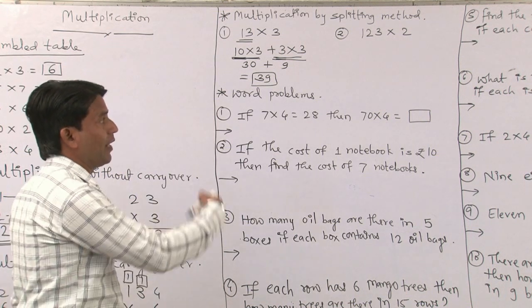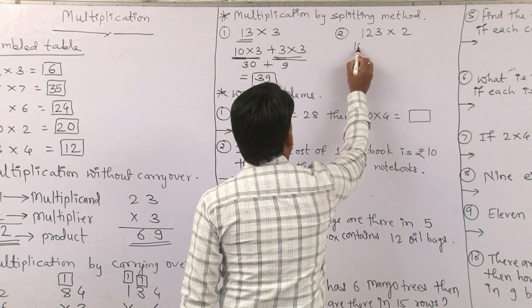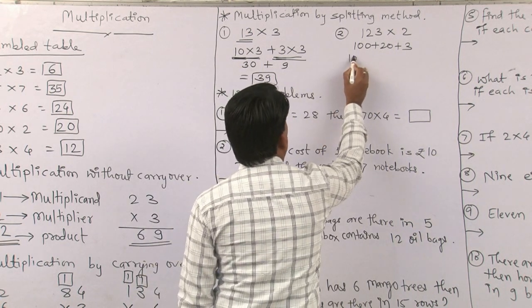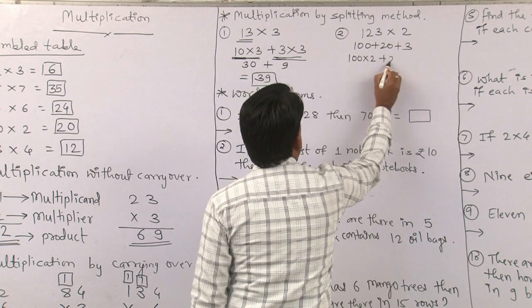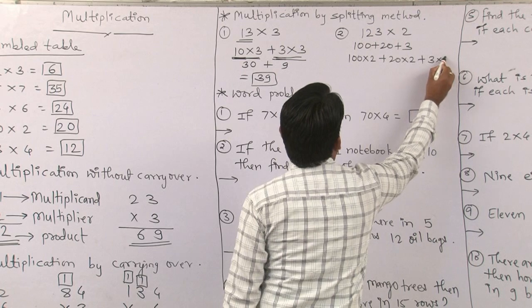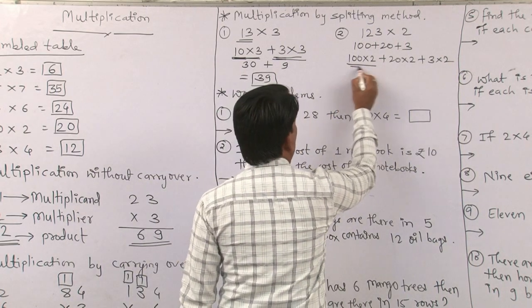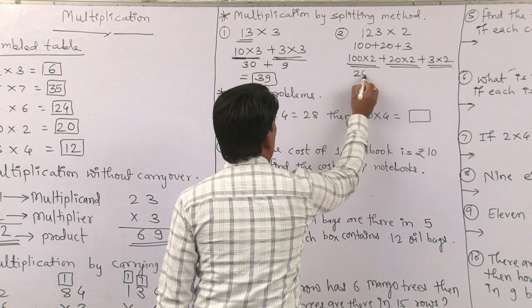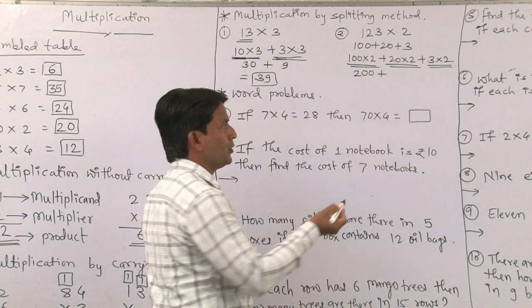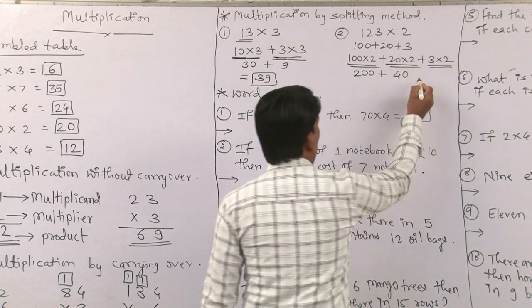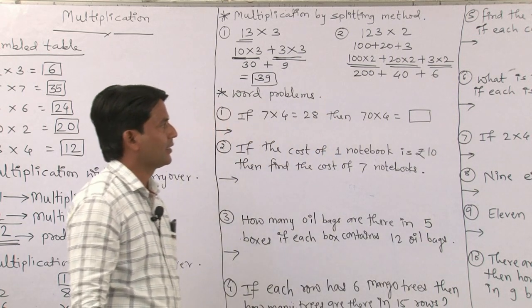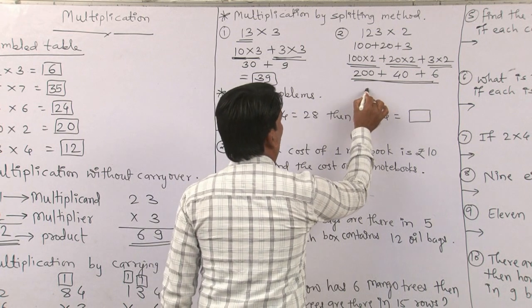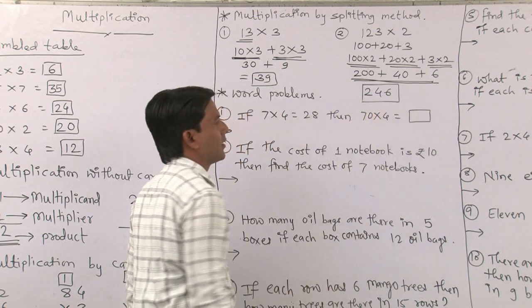Next example using splitting method: 123 multiplied by 2. Expanded form is 100 plus 20 plus 3. Split it: 100 multiplied by 2 is 200, plus 20 multiplied by 2 is 40, plus 3 multiplied by 2 is 6. Writing in contracted form: 200 plus 40 plus 6 equals 246. That is your final answer.